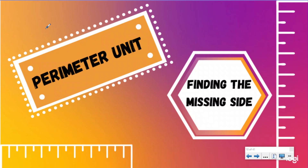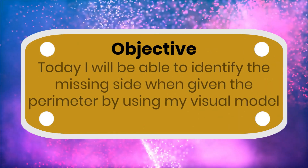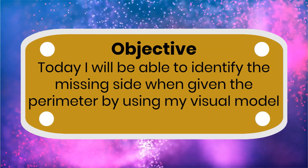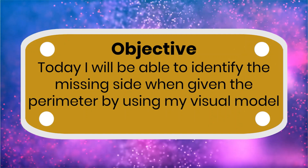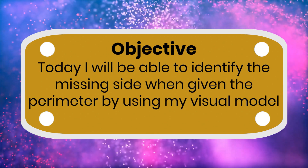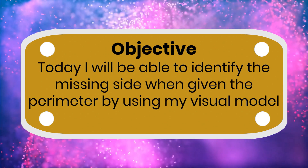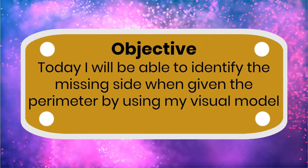What up everybody? Back again here with our perimeter unit. Today we're going to be finding the missing side of our shapes. Our objective today: I will be able to find the missing side when given the perimeter by using my visual model. We're going to be using our tape diagrams, our part-whole model that we practiced using last lesson, to help us.